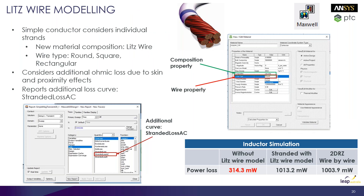For Maxwell updates, there is now Litz wire modeling. This approach considers the extra ohmic losses due to skin and proximity effects, making stranded AC losses more accurate. From the example shown, you can see power losses with and without Litz wire modeling, allowing you to accurately calculate losses for cables in your design.